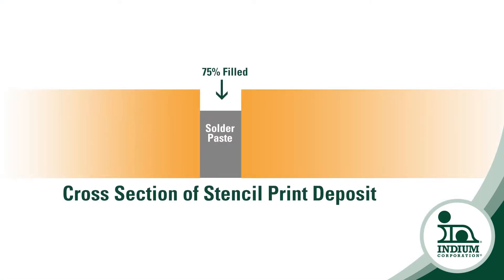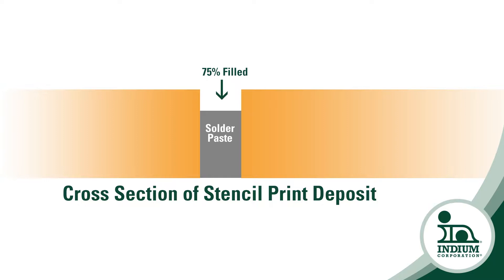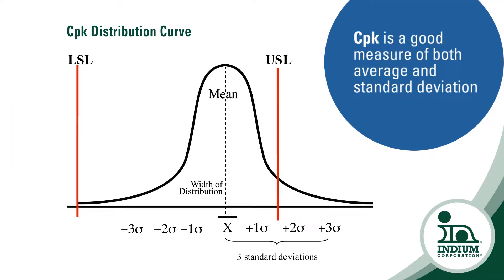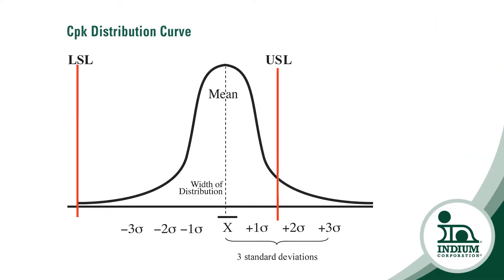So what spec do you guys use? Typically on the low side, 50%, and on the high side, 150%. So why CPK? Because of the precision — it captures both precision and average in one metric.